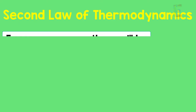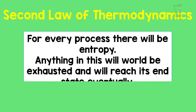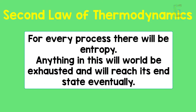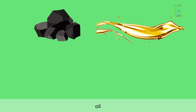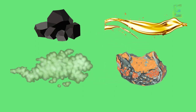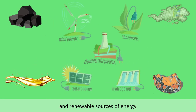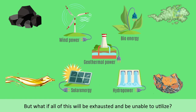So what really is it? As we all know, the second law of thermodynamics teaches us that for every process there will be entropy, meaning anything in this world will be exhausted and will reach its end state eventually. For now, our sources of energy are coal, oil, natural gas, uranium, and renewable sources of energy. But what if all of this will be exhausted and be unable to utilize?